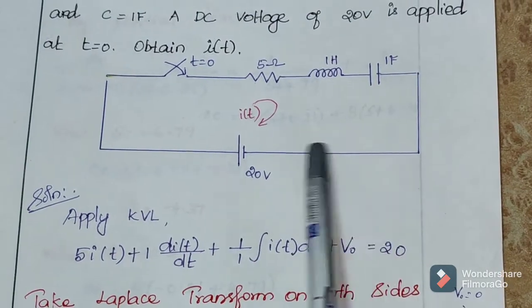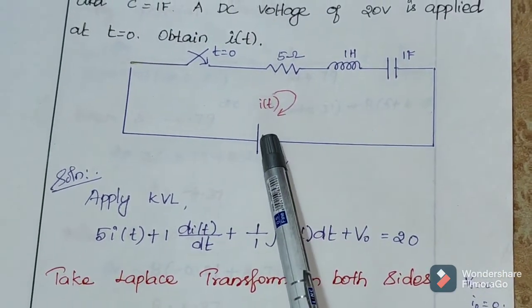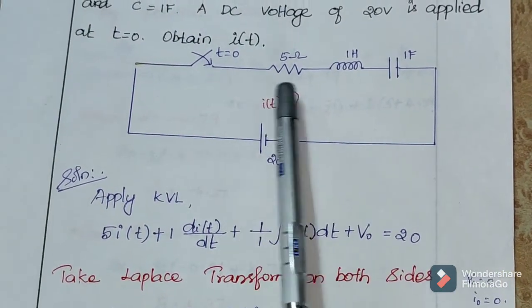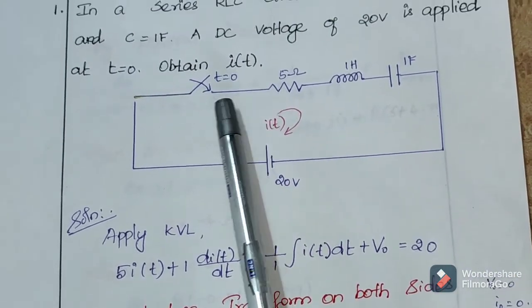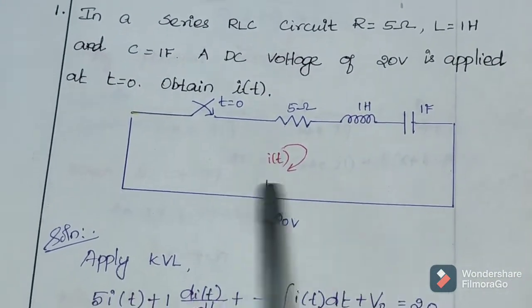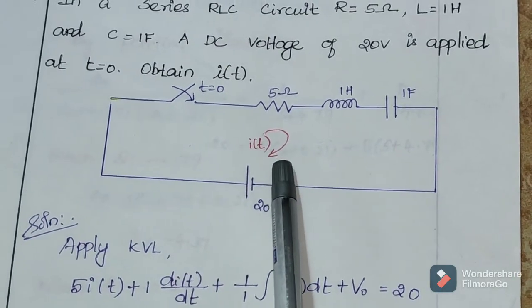So, this is a series RLC circuit. This is the applied voltage, DC voltage. And at time period T is equal to 0, the switch is closed. This is a closed loop circuit at time period T equals 0.